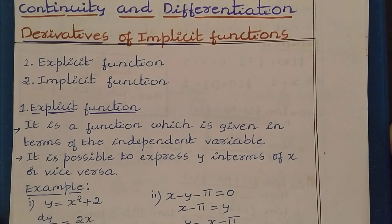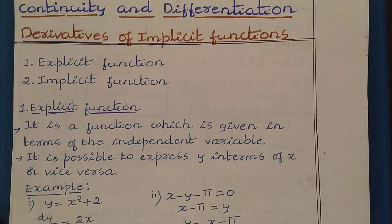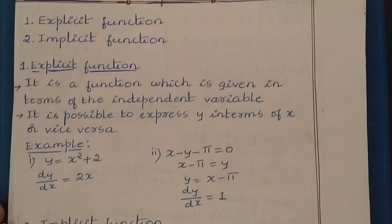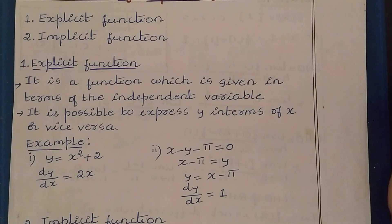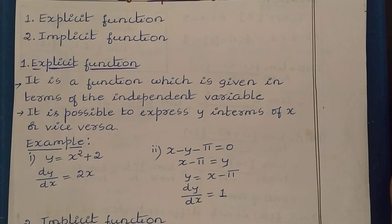In the earlier video, we have solved some problems which come under explicit function. First, let us see what is an explicit function and what is an implicit function. Explicit function means, in the case of explicit function, we have the independent variable and dependent variable, and the function is given in terms of the independent variable.